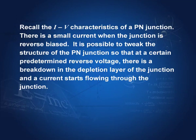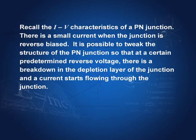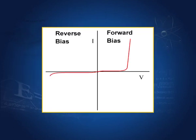Recall the I-V characteristics of a P-N junction. As soon as the voltage exceeds 0.6 V in a silicon diode, the current shoots up. There is very little reverse current when the junction is reverse biased. It is possible to tweak the structure of the P-N junction so that at a certain predetermined reverse voltage, there is a breakdown in the depletion layer of the junction and a current starts flowing. The device in which this is done is known as a zener diode.